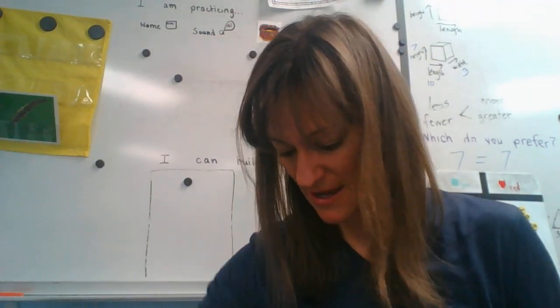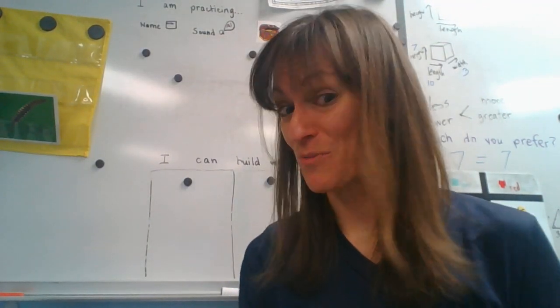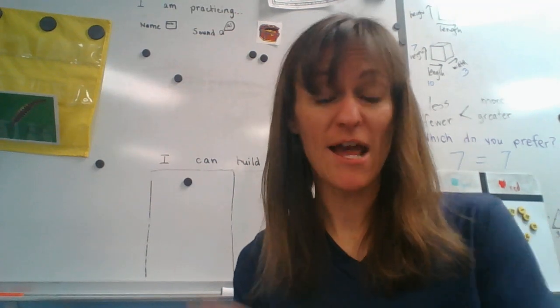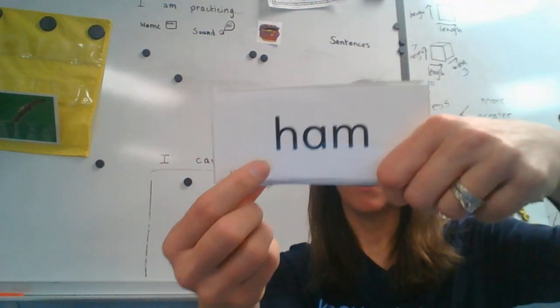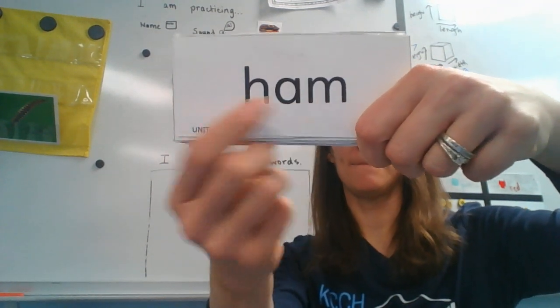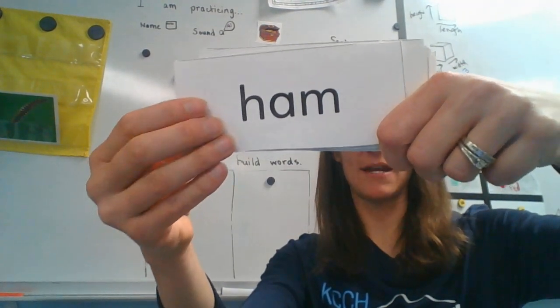Back to the language. Now we're going to go ahead and do our treasure box words. We're going to tap and sweep the first word and then whole word read all the rest. Here we go. H, A, M, ham. Now whole word read.